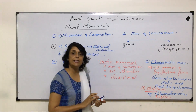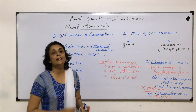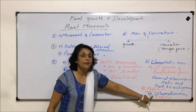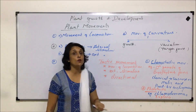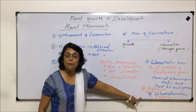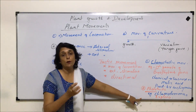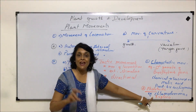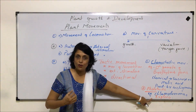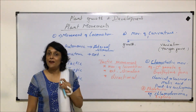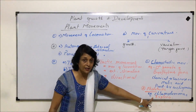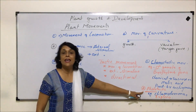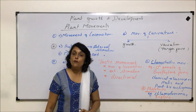Another example is Euglena, which is considered a link between the animal and plant kingdoms. It shows plant characteristics such as the presence of chloroplasts and performs photosynthesis when light is available; when light is absent, it behaves like an animal and eats other organisms. Euglena is also flagellate and swims towards light when light is present so it can perform photosynthesis.